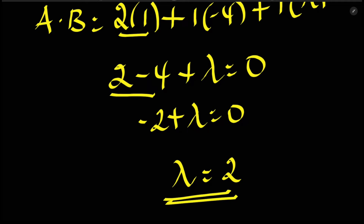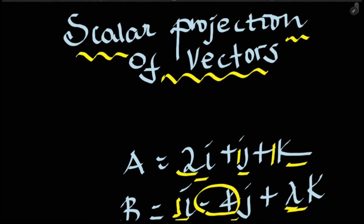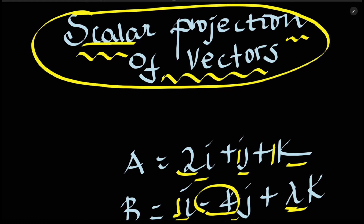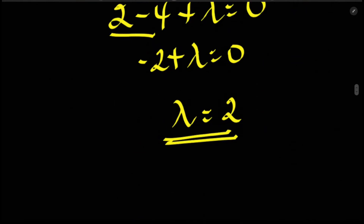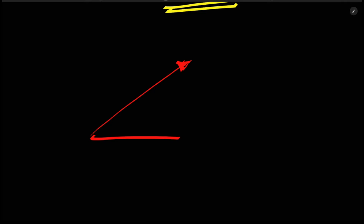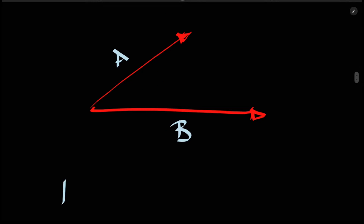Now I'm going to cover vector projection — specifically scalar projection of vectors. So let's say we have two vectors: imagine this is vector A and this is vector B.